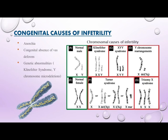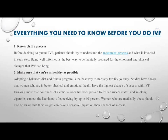Congenital causes of infertility include anorchia, congenital absence of the vas deferens, and genetic abnormalities such as Klinefelter syndrome and Y-chromosome microdeletions. Everything you need to know before doing IVF: (1) Research the process — before deciding to pursue IVF, patients should try to understand the treatment process and what is involved in each step. Being well informed is the best way to be mentally prepared for the emotional and physical changes IVF can bring. (2) Make sure you are as healthy as possible — adopting a balanced diet and fitness program is the best way to start any fertility journey.